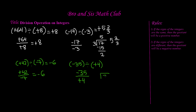We're going to forget about the signs and just do normal division. We know that 4 goes into 35 eight times, because 4 times 8 is 32. When we subtract, we're left with 3. So we rewrite this as a mixed number: our quotient, which is 8, becomes our whole number; our remainder, which is 3, becomes our numerator; and our denominator is our divisor, which is 4. So we have 8 and 3 fourths. But remember, the quotient will be a negative number, so negative 35 divided by positive 4 equals negative 8 and 3 fourths.